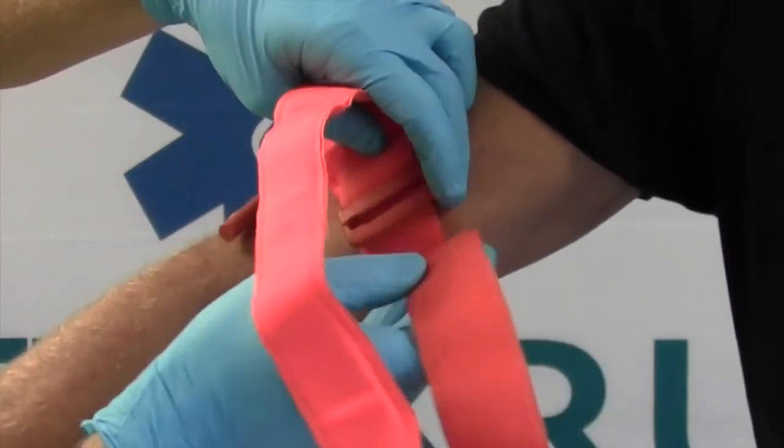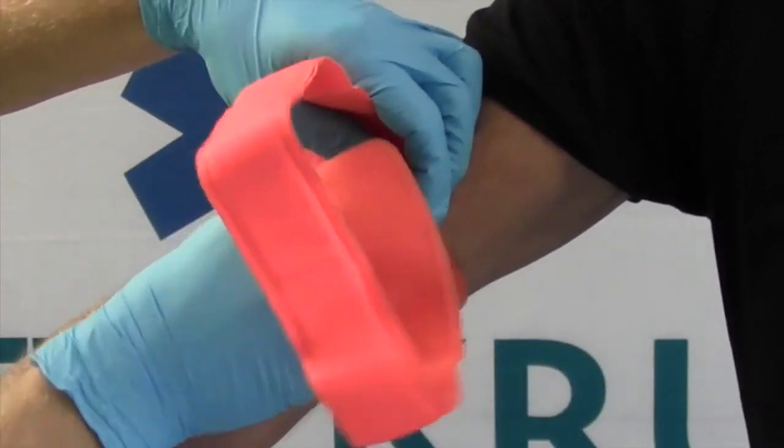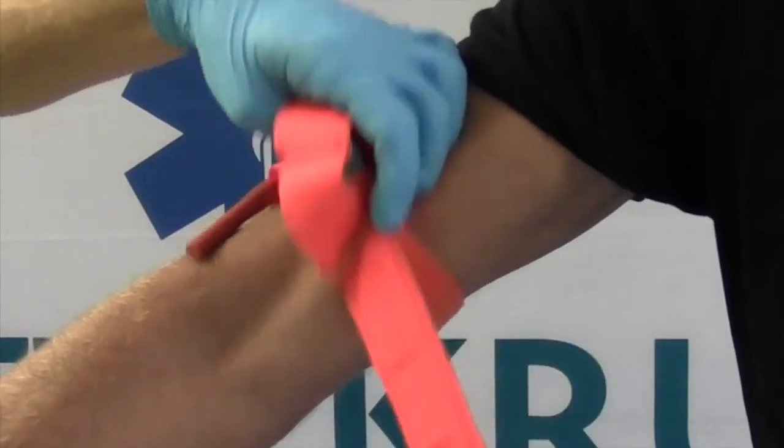Bevestig het klikkenband in de tegengestelde richting. Zorg dat de borgklip vrij en beschikbaar blijft voor het zekere.